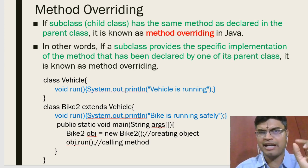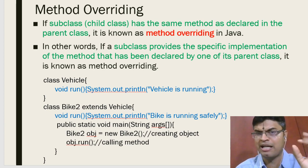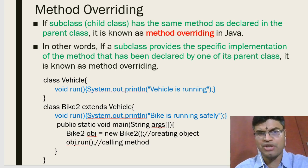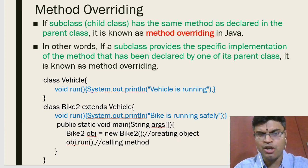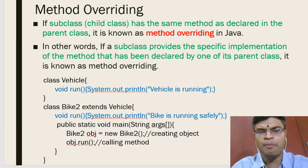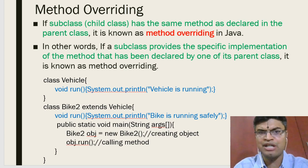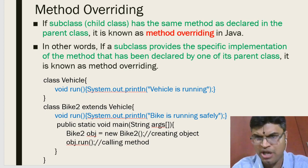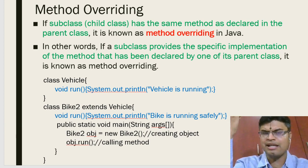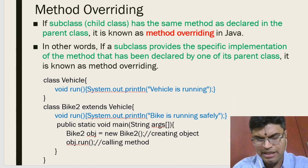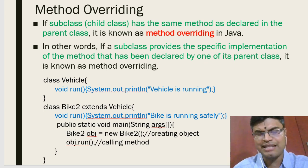Both classes have the same function name 'run' with no parameters. In the main function, an object 'obj' is created for the child class Bike2. When you call obj.run, it refers to the child class run function, not the parent class Vehicle's run. The run function in Bike2 overrides the run function in Vehicle, and it will print 'bike is running safely'.